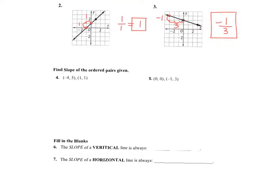Four and five — I'm just going to do one of these with you and let you do the other one on your own. What's the slope formula? Y2 minus y1 over x2 minus x1. So that's what you're going to use on this.